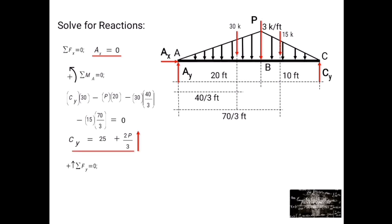For AY, using summation of forces along Y equals 0, considering upward positive: AY plus 25 plus 2P over 3 minus P minus 15 minus 30 equals 0. So AY equals 20 plus P over 3.